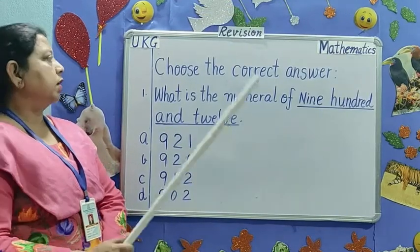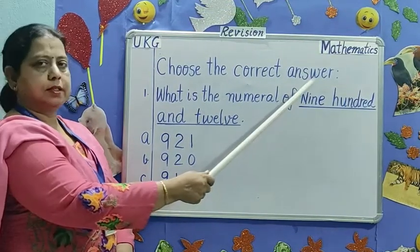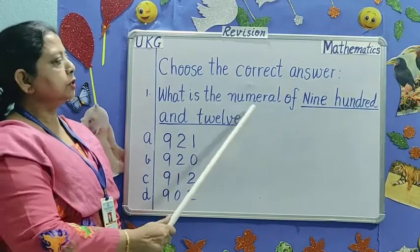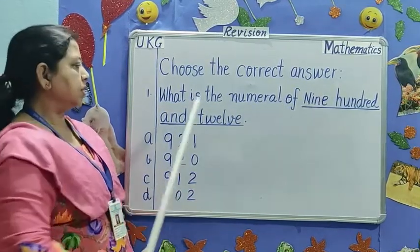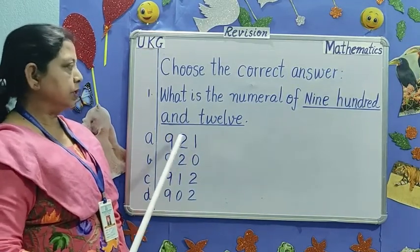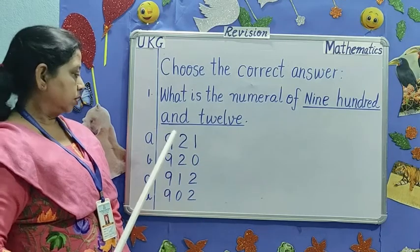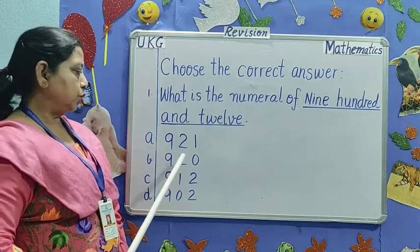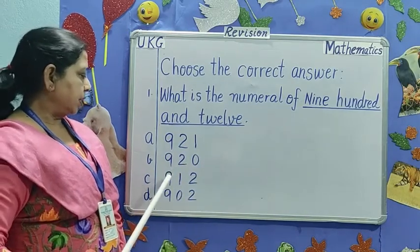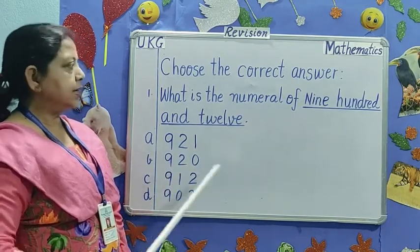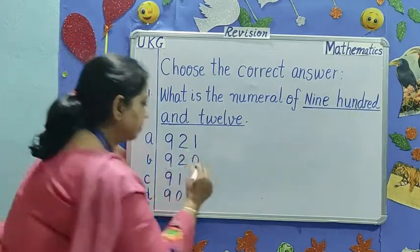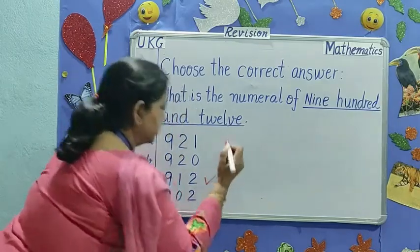For example, choose the correct answer. Number 1. What is the numeral of nine hundred and twelve? A. 921. B. 920. No. C. 912. Yes. So check this answer. This is the correct answer.